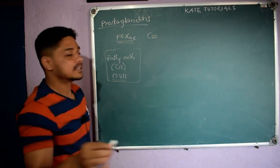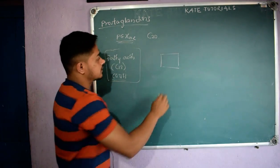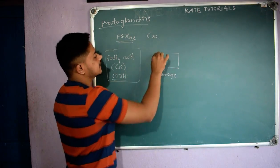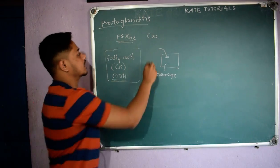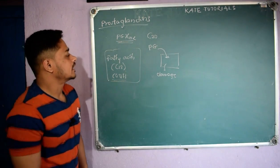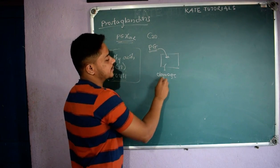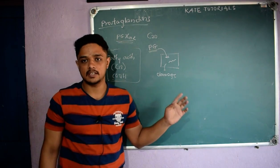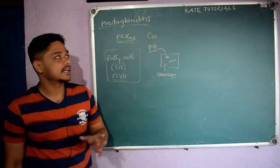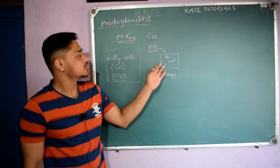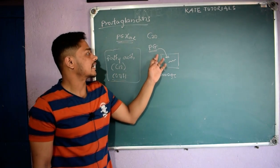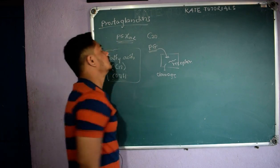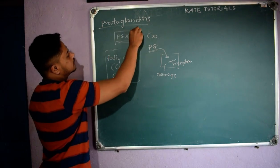Prostaglandins are produced in the tissue where damage occurs. If some damage happens to a tissue, the body will secrete prostaglandins (PG). That PG which is secreted in the damaged tissue acts on receptors present there and will cure the damage. So prostaglandins are fatty acids produced in damaged tissue to repair it by interacting with receptors present in that tissue.